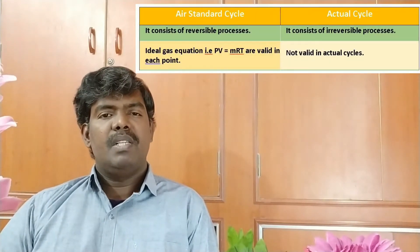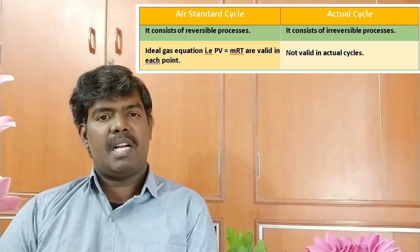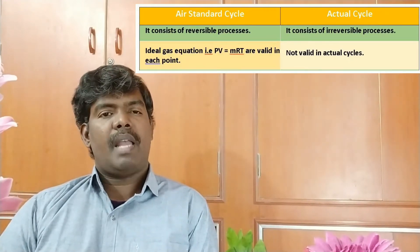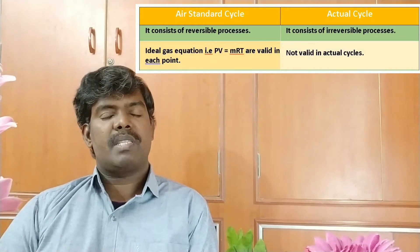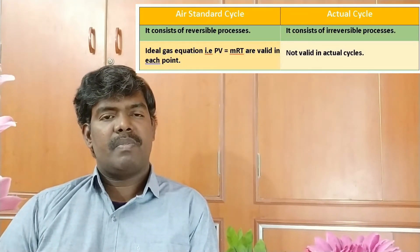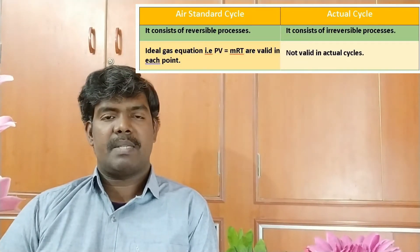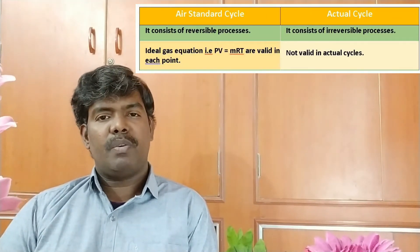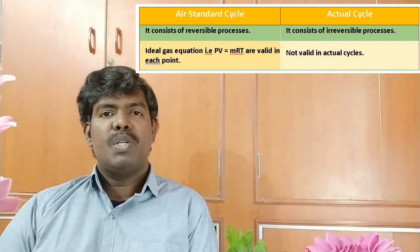The fourth difference: a standard cycle is considered a reversible process because it is theoretical. In the Otto cycle, for example, there are four processes: two isentropic processes and two constant volume processes. Process 1-2 is isentropic compression, 2-3 is heat addition at constant volume, 3-4 is isentropic expansion, and 4-1 is heat rejection at constant volume.